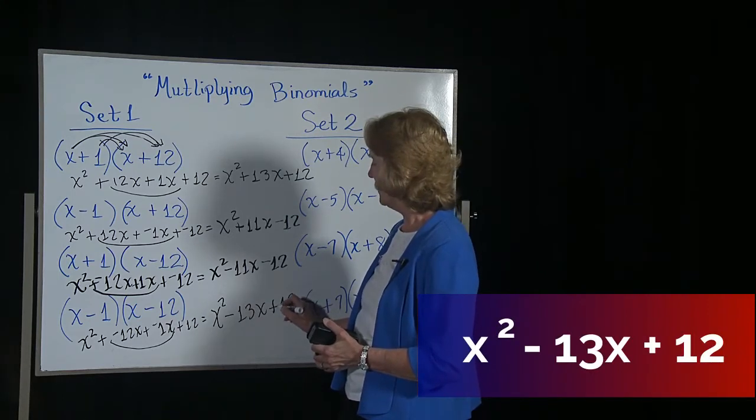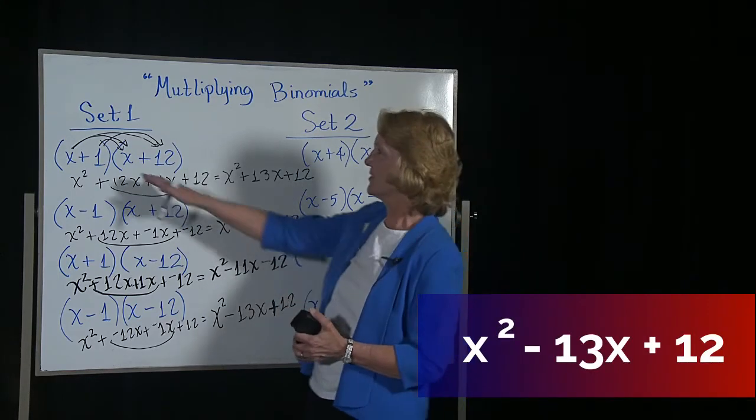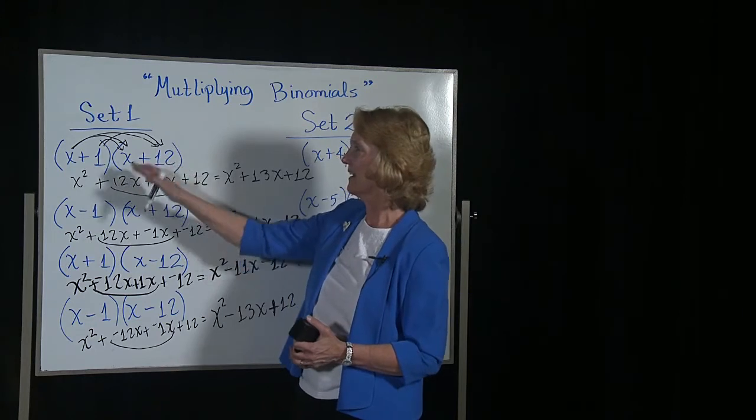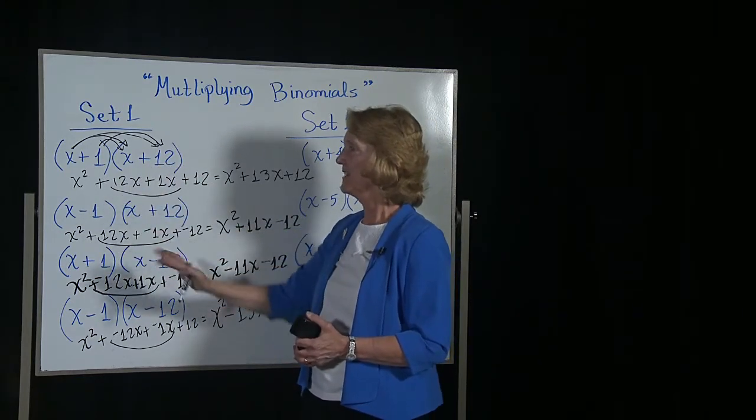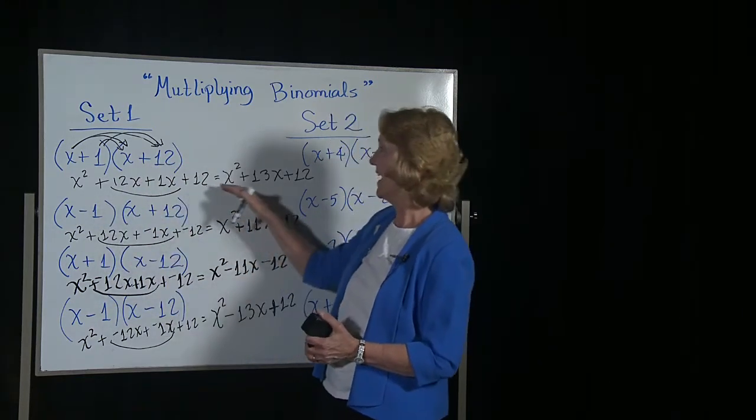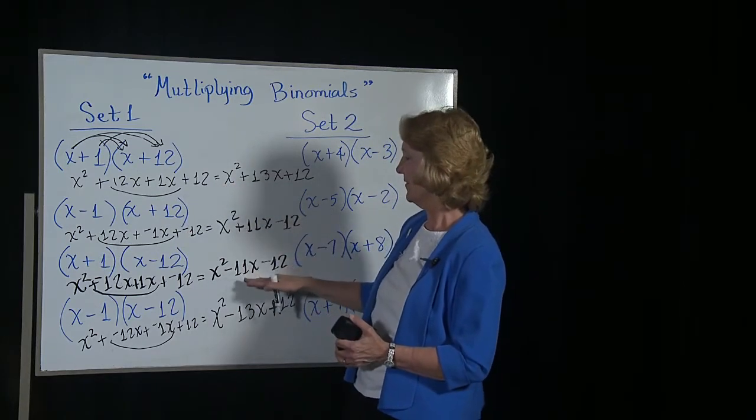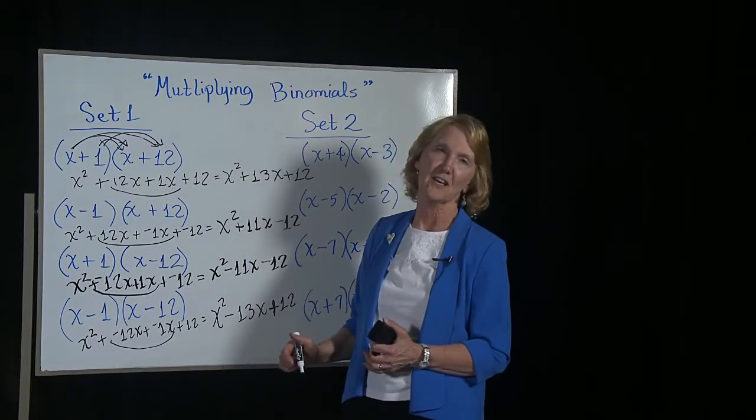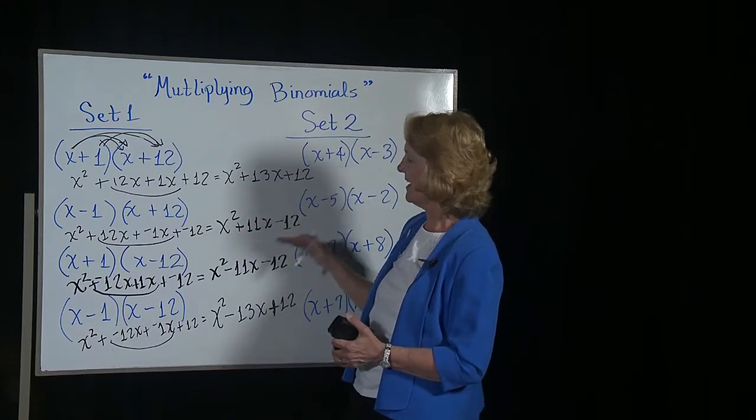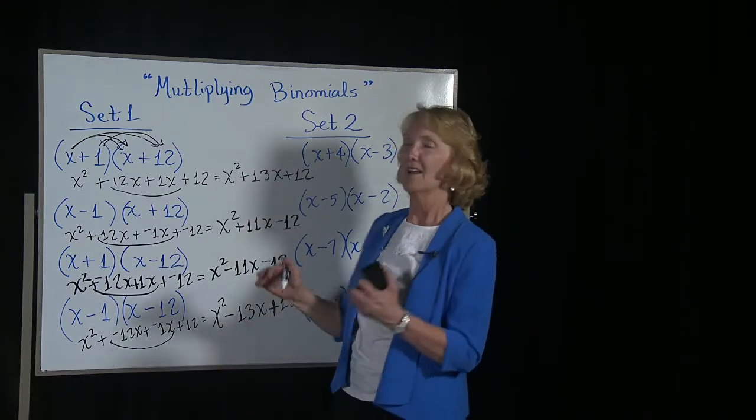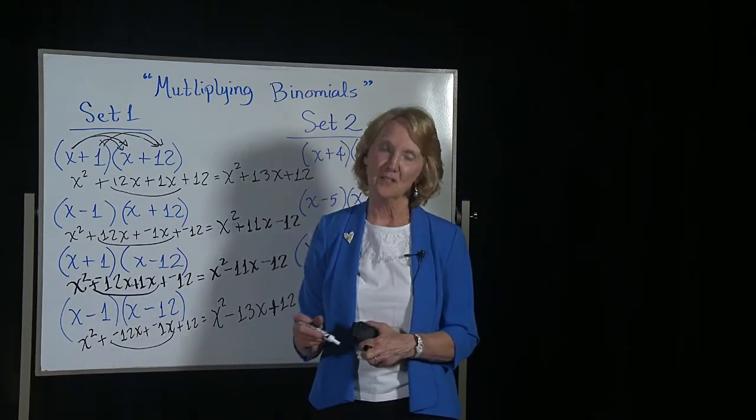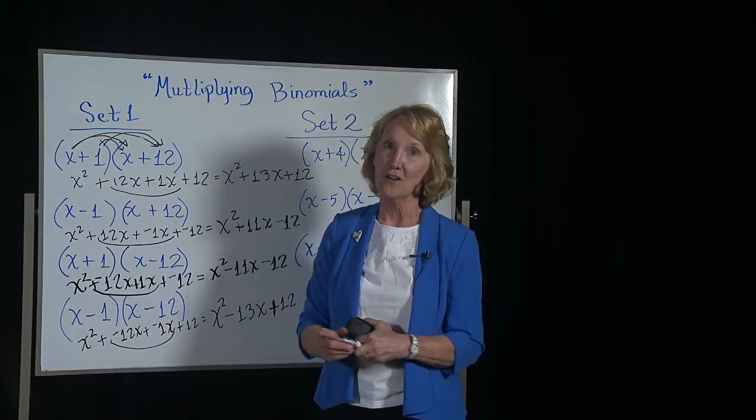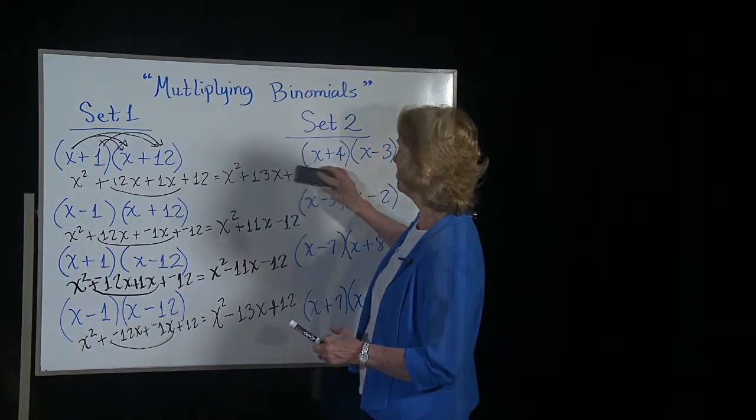Now if you notice, the terms were quite a bit alike. They always had an x and a 1 and an x and a 12. It's just that I changed the signs and little parts of the answer changed. This is called a trinomial. The answers became trinomials. It just depends on the problem as to where the signs are.